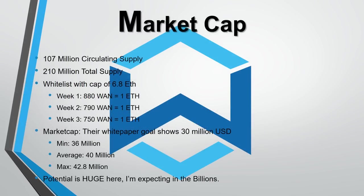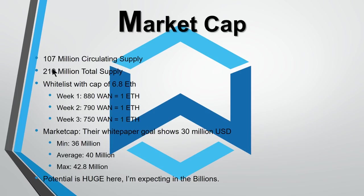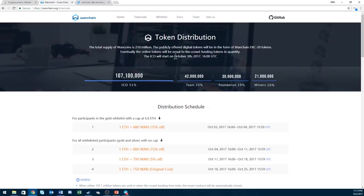Their market cap: they have 107 million circulating supply — this is what they'll be selling at their ICO. Their total supply is 210 million. With their whitelist, they have a cap of 6.8 ETH per person. Week one, you get 880 WAN per ETH. Week two, 790 WAN per ETH. Week three, 750 WAN per ETH. This starts on October 3rd — actually, it starts tomorrow.